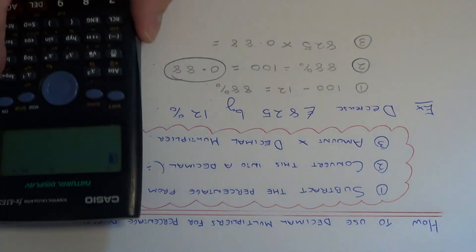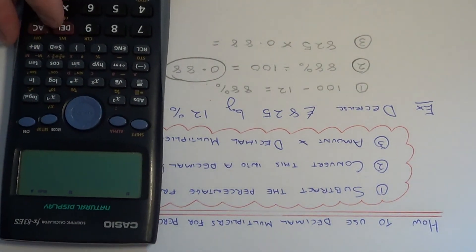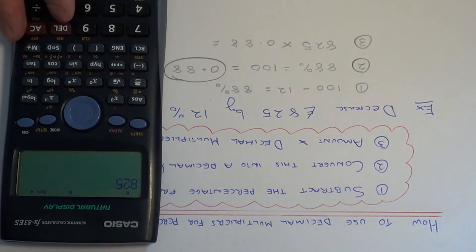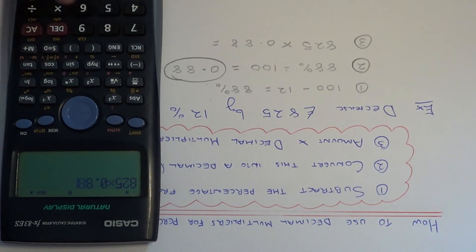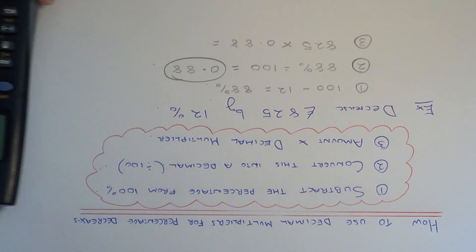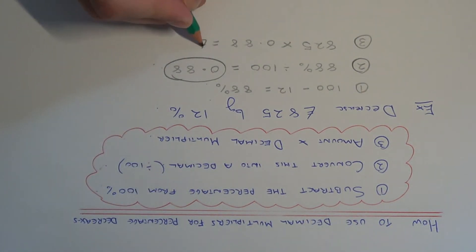We just need to put this on your calculator. So 825 times 0.88 gives us £726. And that is your final answer.